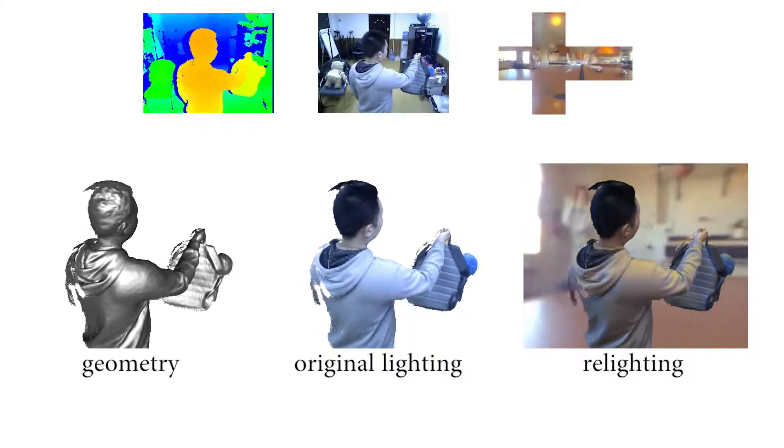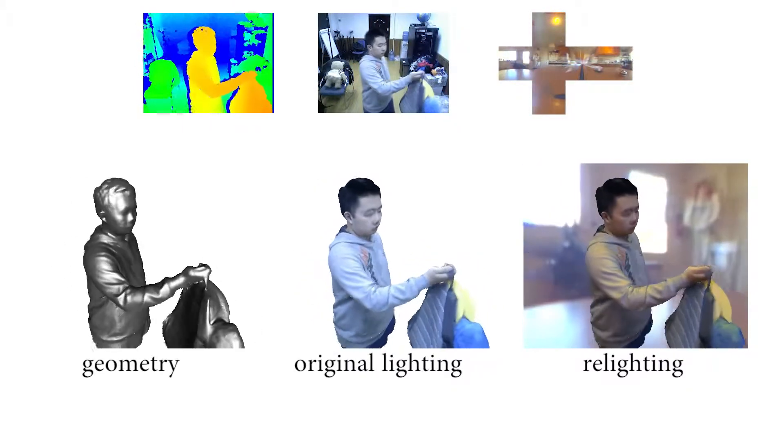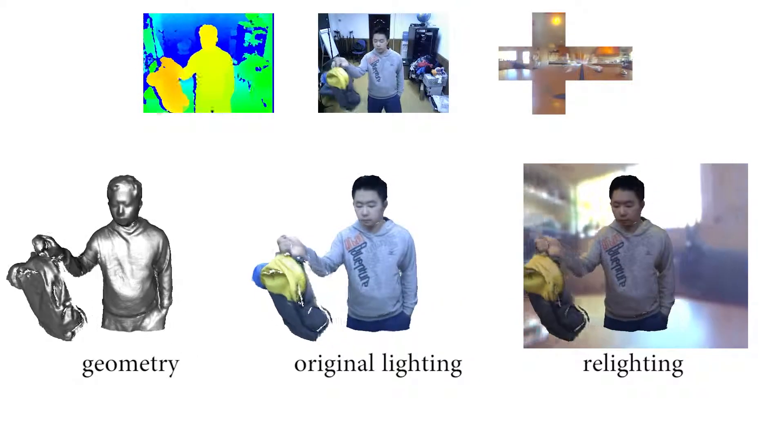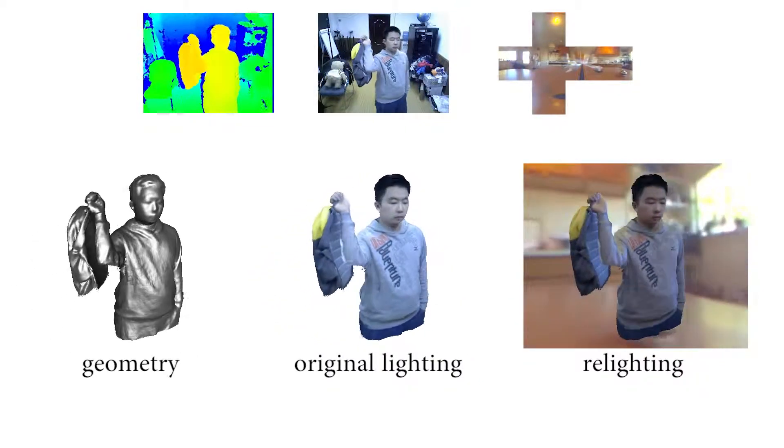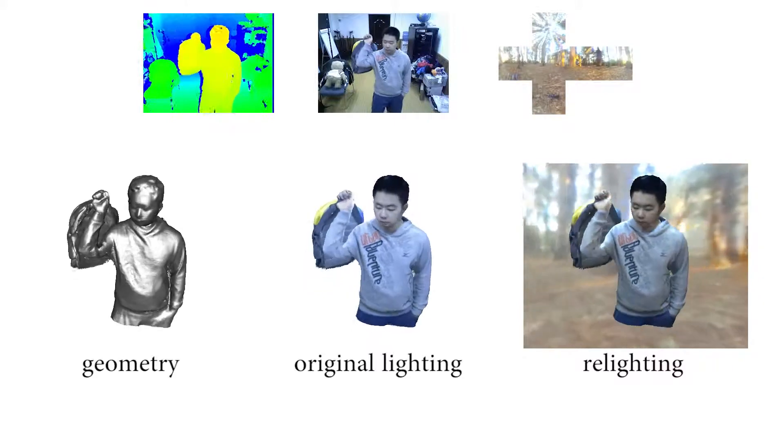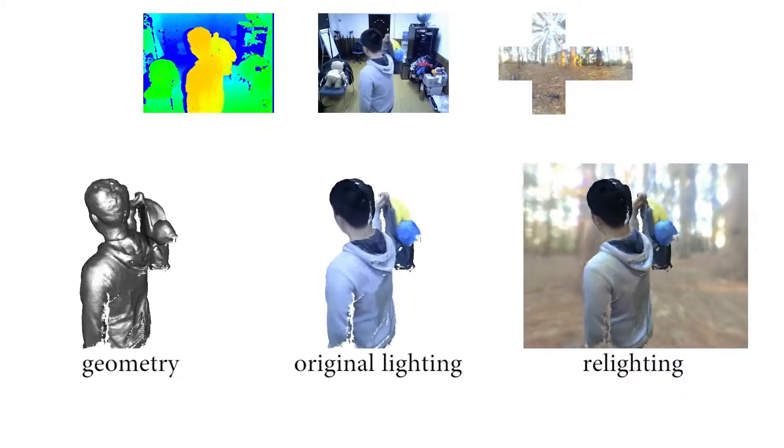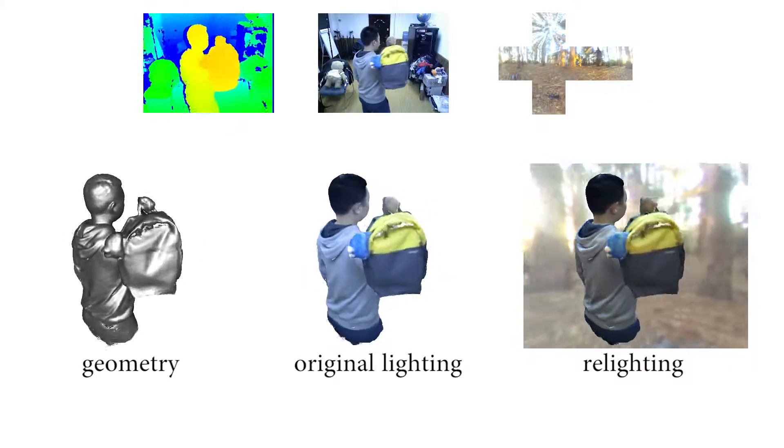In this result, a performer is interacting with a backpack. Our system tracks large non-rigid motion, realistically produces closed albedo in geometry, and generates realistic relighting results simultaneously in real-time.